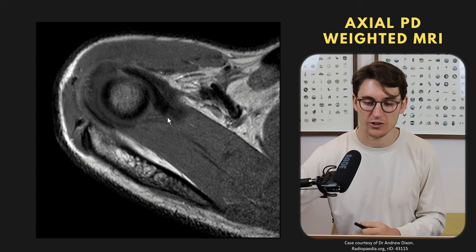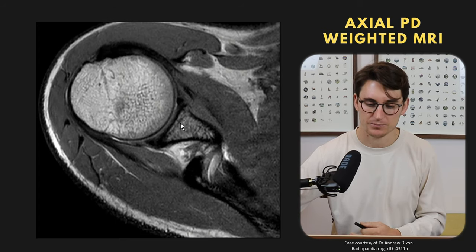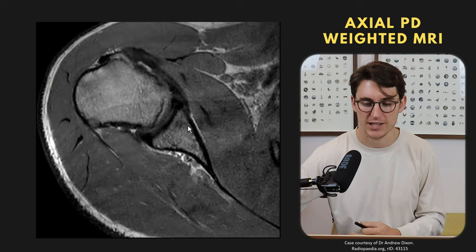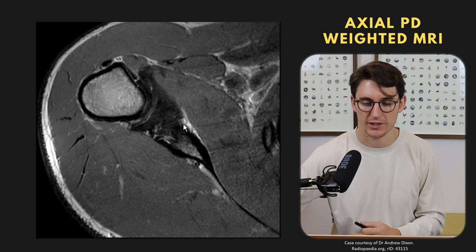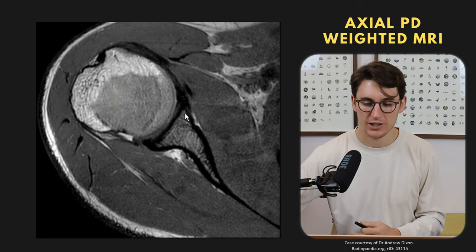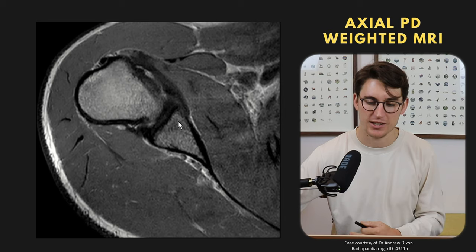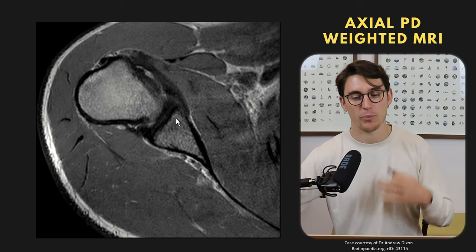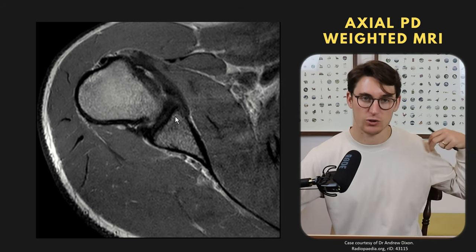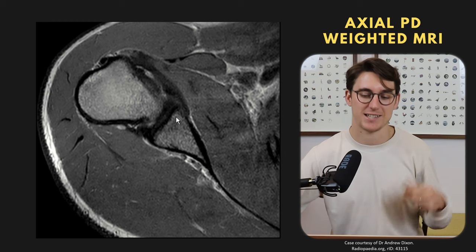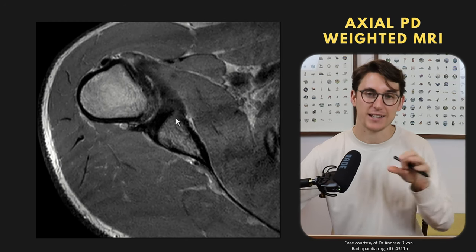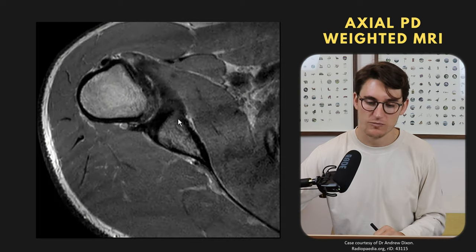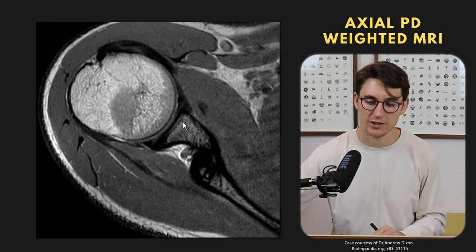Scrolling down inferiorly to the glenoid, it should have a good triangular shape. We look carefully at the anterior edge, especially the anterior inferior edge, for any bony Bankart lesions — that's when the shoulder dislocates anteriorly and causes this anterior inferior bit of bone to break off. In this case, we can see a normal glenoid.